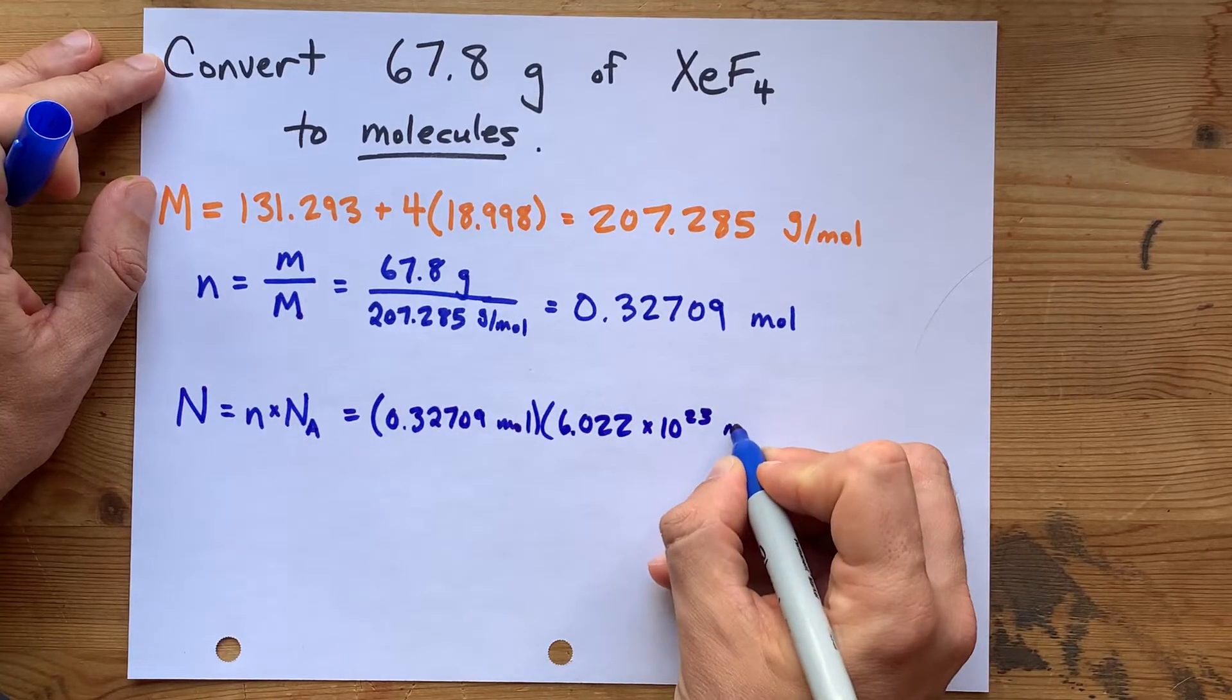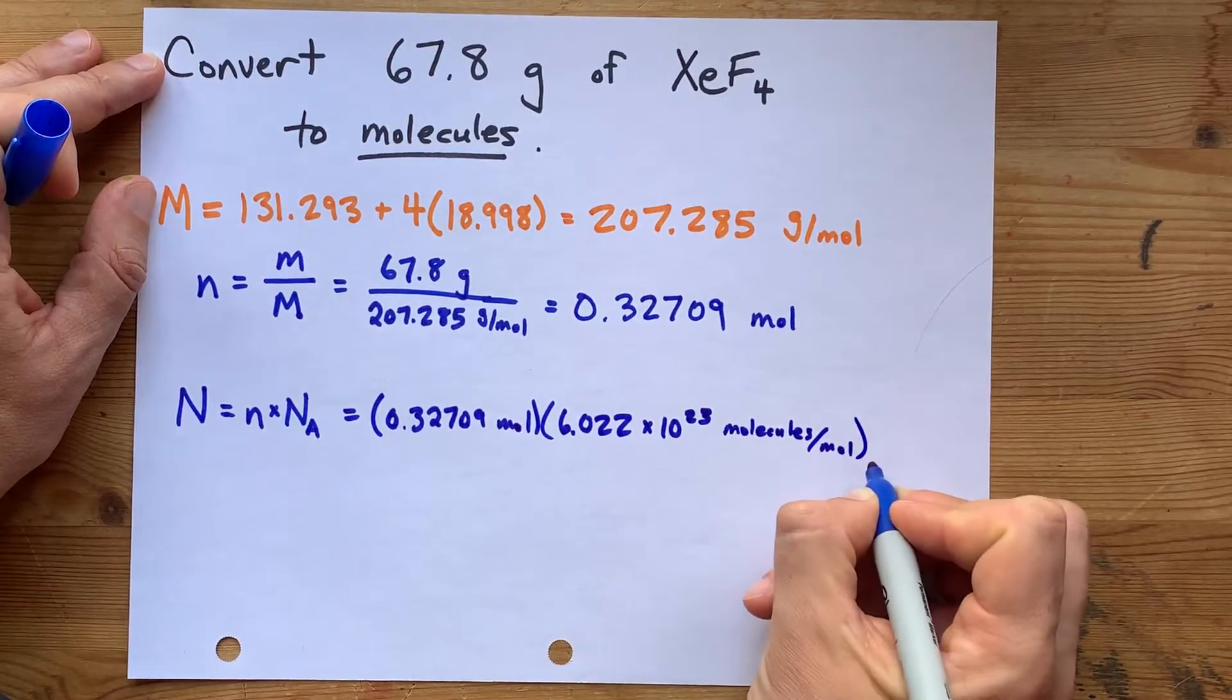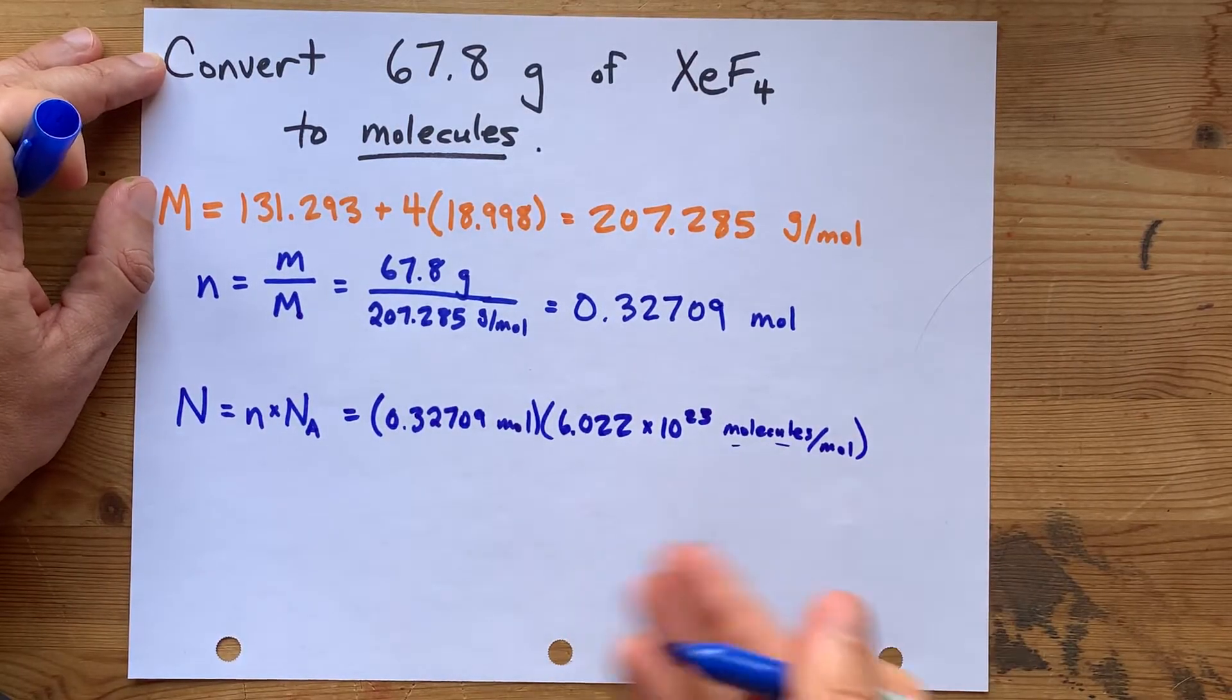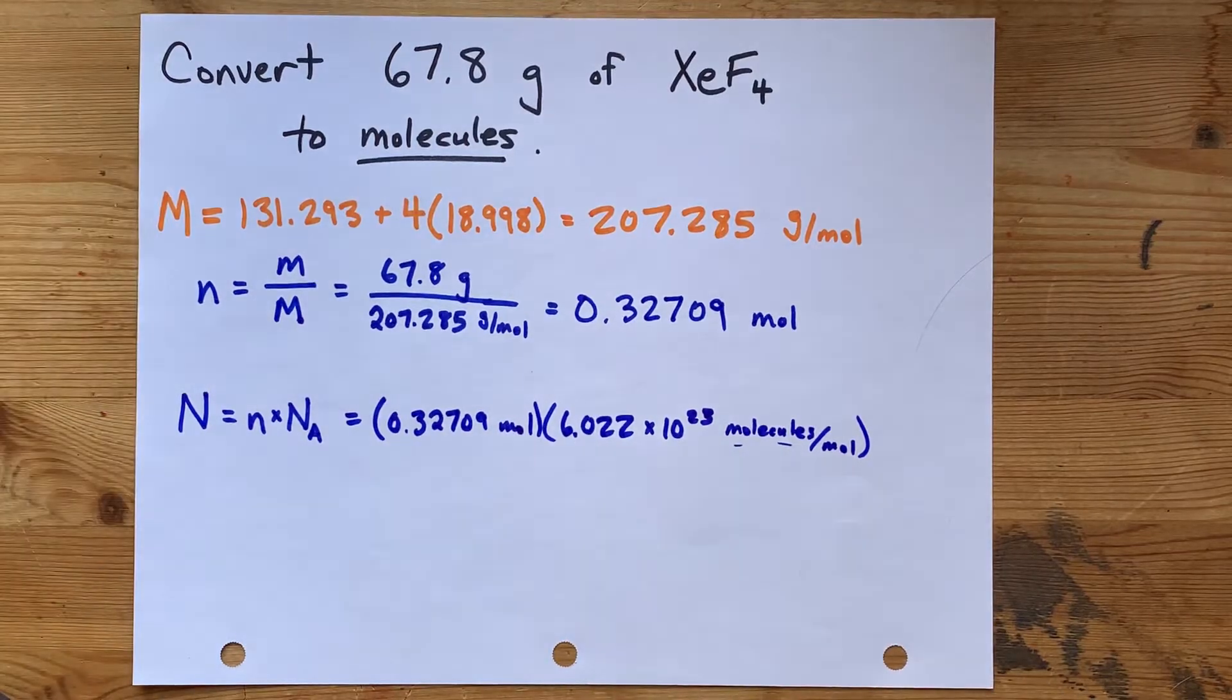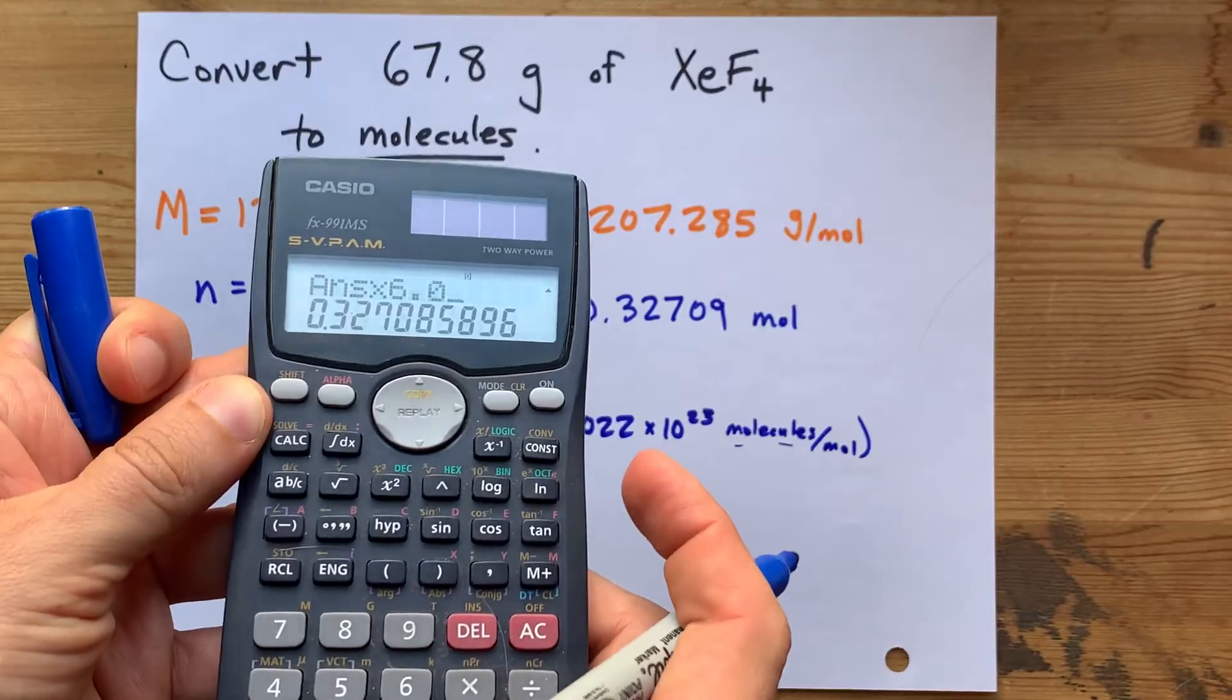Now, the units on that, if you have to write some, is molecules per mole. It's the count of how many things there are in a mole of something. But again, it's the multiplication that matters. Times 6.022.